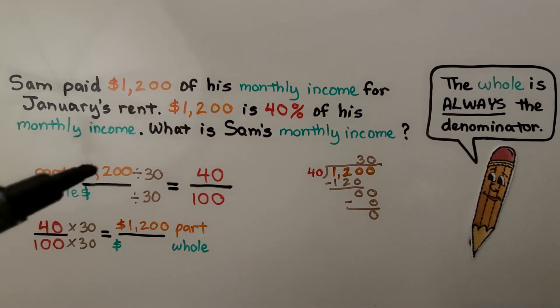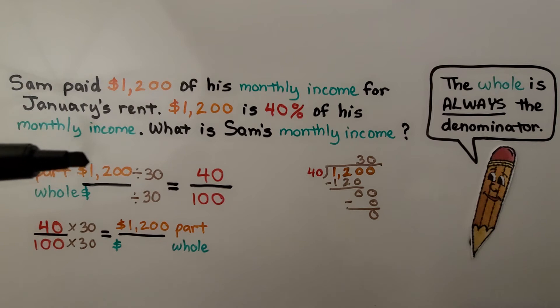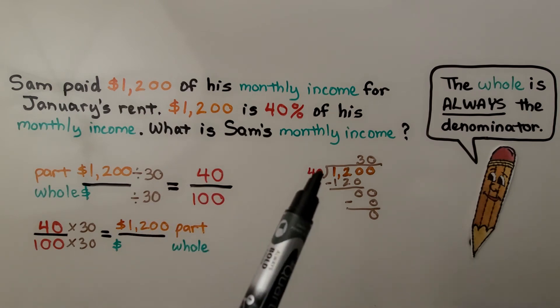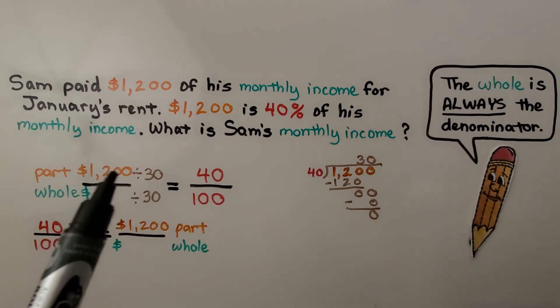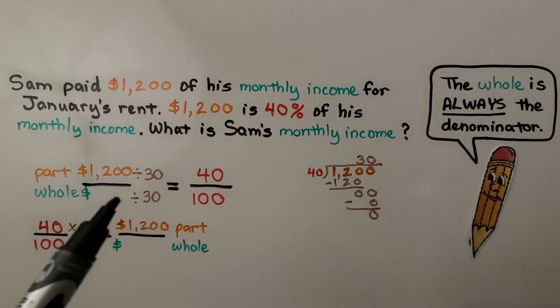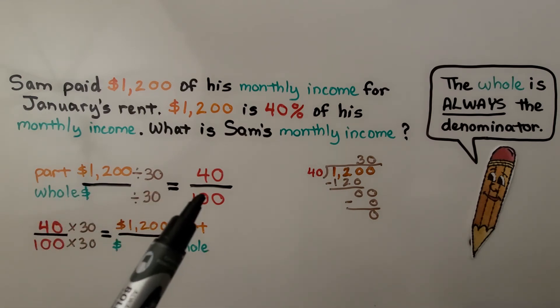And we know that the percentage is 40, so that's going to be 40 over 100. We have a ratio here and a ratio here. And we can think: well, 1,200 divided by 30 is equal to 40. We can go the opposite direction and do 1,200 divided by 40 to get the 30. That means whatever this whole amount is divided by 30 is going to equal 100.